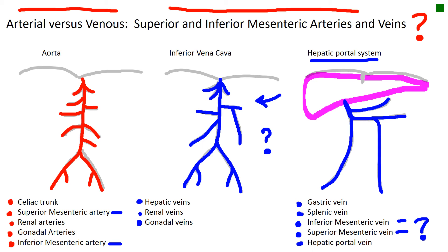The superior mesenteric vein also drains into the hepatic portal vein. Why is this important? Because the liver is an organ of detox. It's a beautiful system that you and I have, so that if we eat something that has pesticides in it, it gets detoxed in the liver before the hepatic veins drain this blood back into the inferior vena cava so that it can go back into the general circulation.